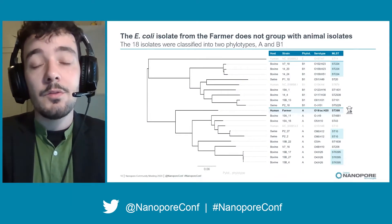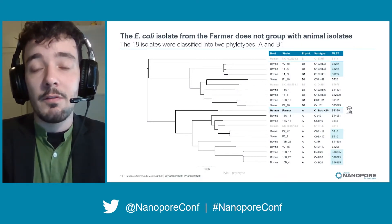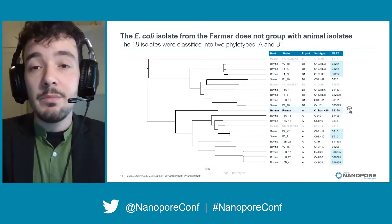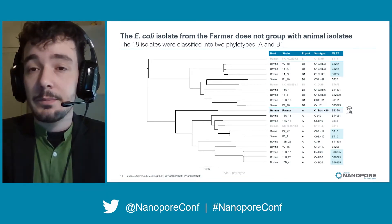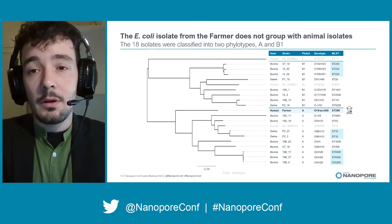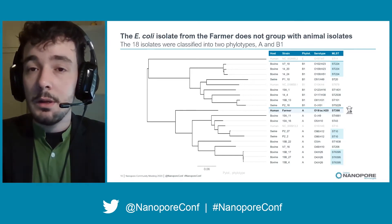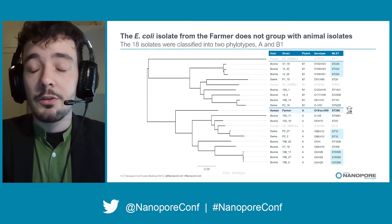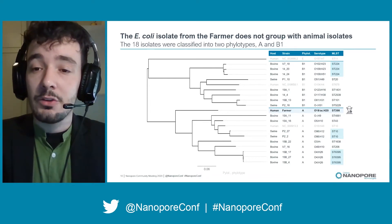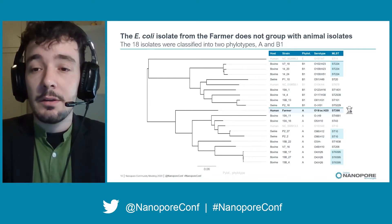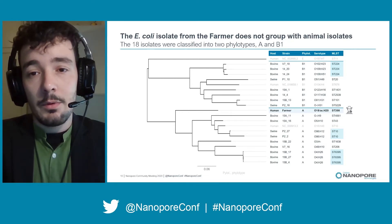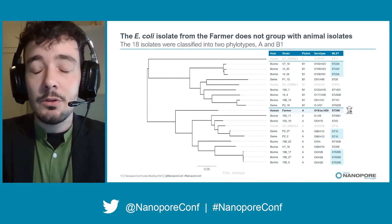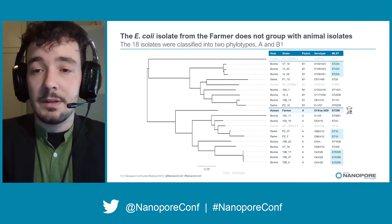Here is represented the phylogenetic tree of the 18 samples and three references. As you may notice, isolates clustered by phylogroup B1 and A. However, although some animal isolates clustered by MLST or serotype, the farmer isolate did not group with any animal sample.